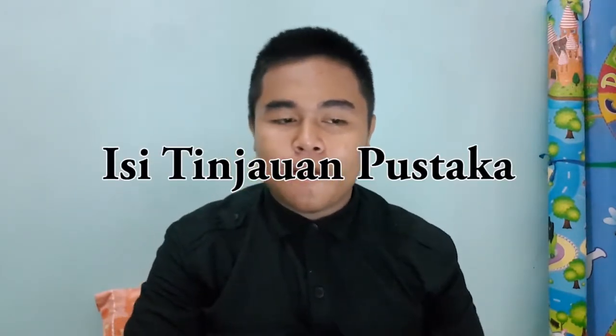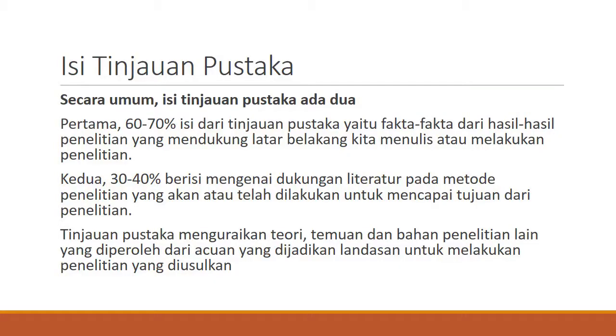Kita beranjak ke poin berikutnya, yaitu isi tinjauan pustaka. Isi tinjauan pustaka secara umum terbagi menjadi dua: pertama, 60-70% isi dari tinjauan pustaka berisi fakta-fakta dari hasil-hasil penelitian yang mendukung latar belakang kita menulis penelitian tersebut; lalu yang kedua, 30-40% berisi mengenai dukungan literatur pada penelitian yang akan atau telah dilakukan untuk mencapai tujuan dari penelitian. Isi tinjauan pustaka menguraikan teori, temuan, dan bahan penelitian lain yang dijadikan landasan untuk melakukan penelitian yang diusulkan.